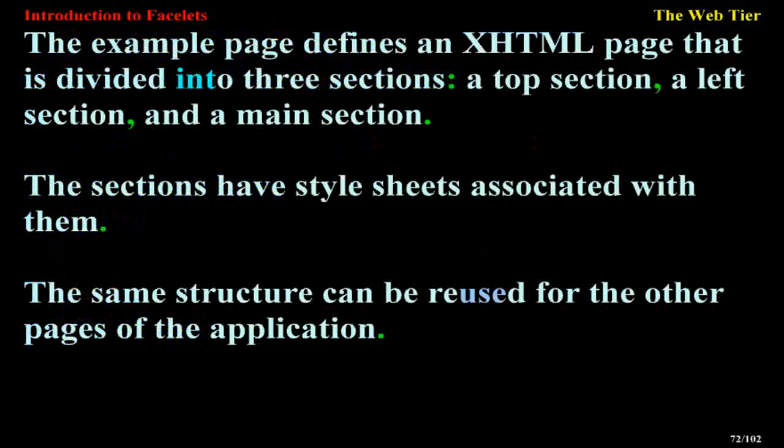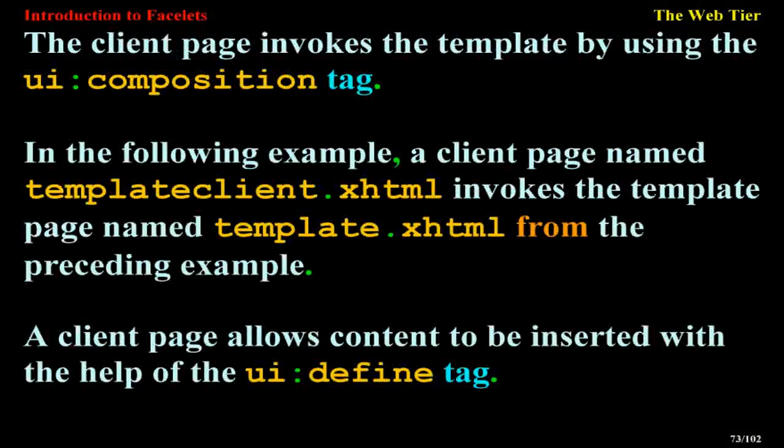The example page defines an XHTML page divided into three sections: a top section, a left section, and a main section, with style sheets associated with them. The same structure can be reused for other pages of the application. The client page invokes the template by using the ui:composition tag. In the following example, a client page named TemplateClient.xhtml invokes the template page named Template.xhtml.